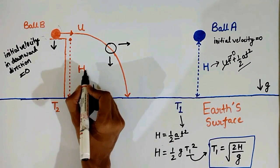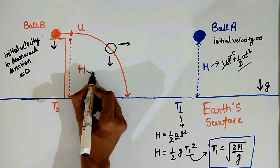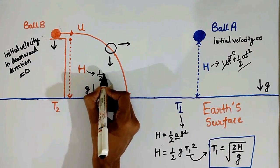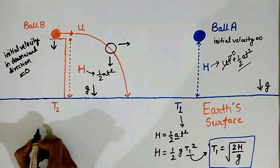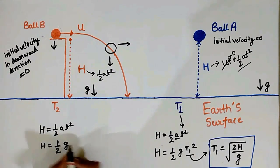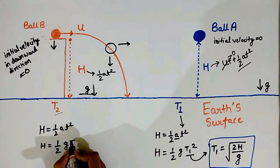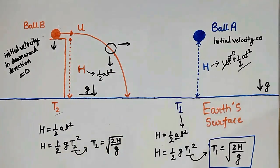So we can again write the equation of motion h equals half acceleration into time squared. So you can clearly see that the value of T2 will be equal to under root 2h by g, which is surprisingly equal to T1.